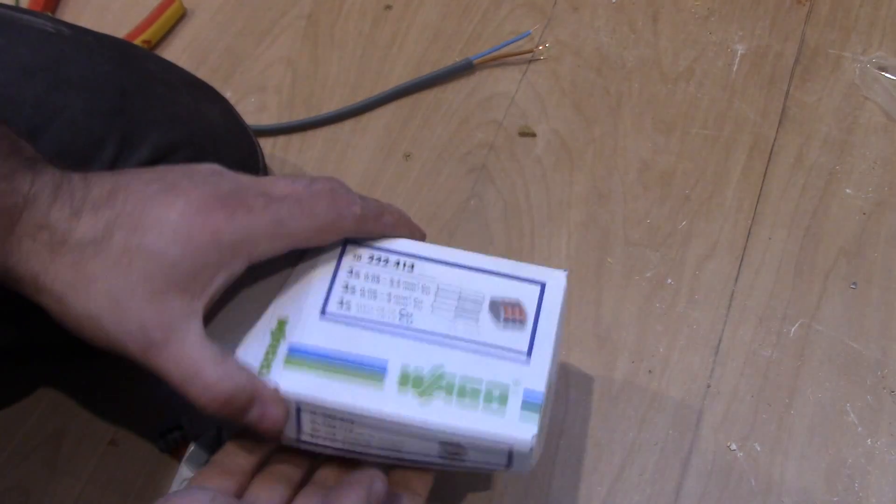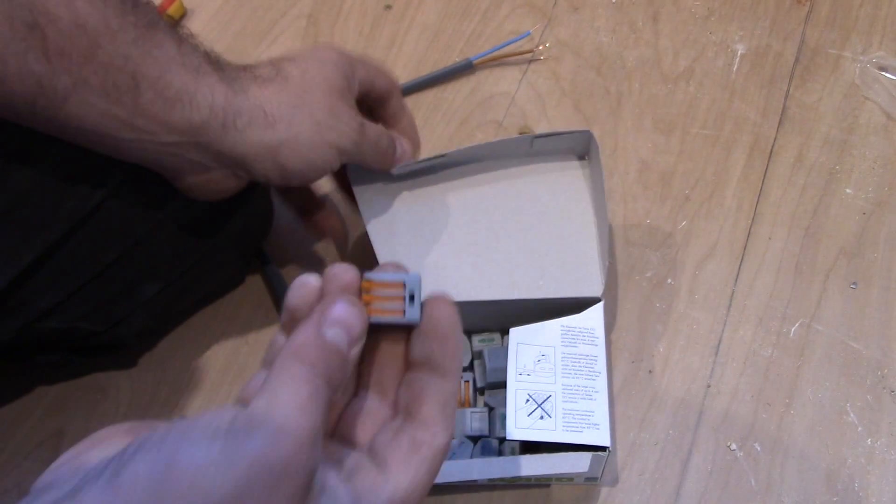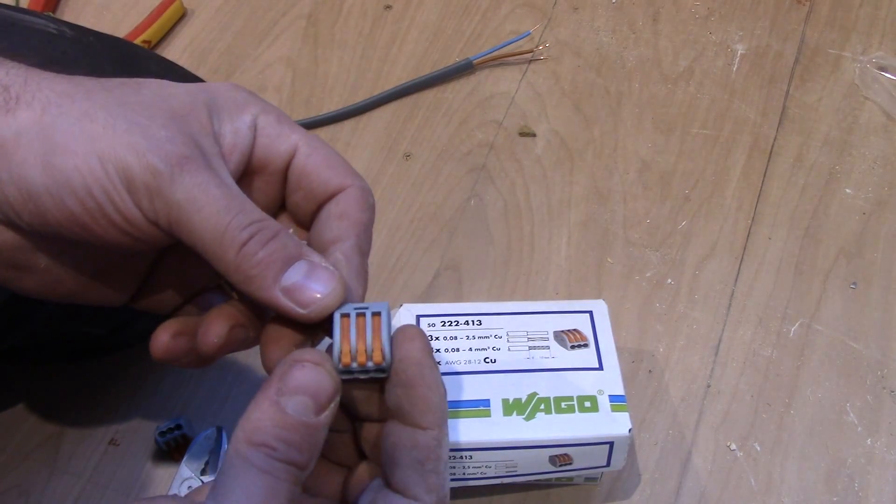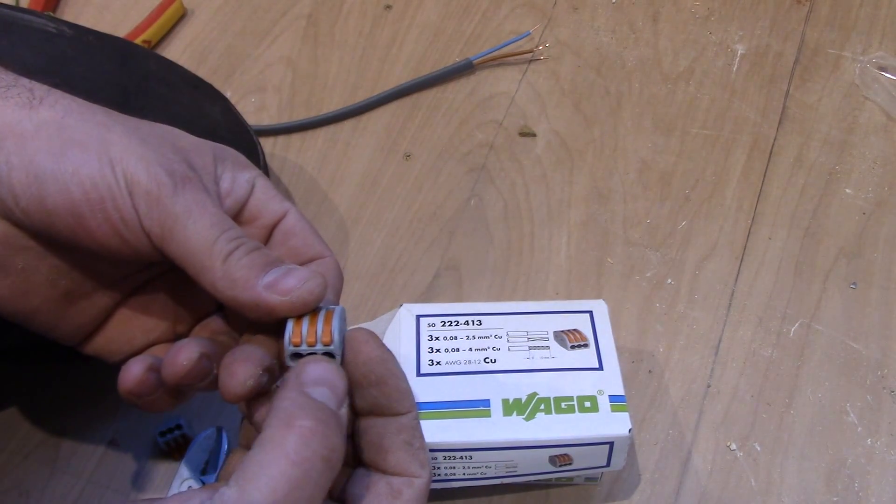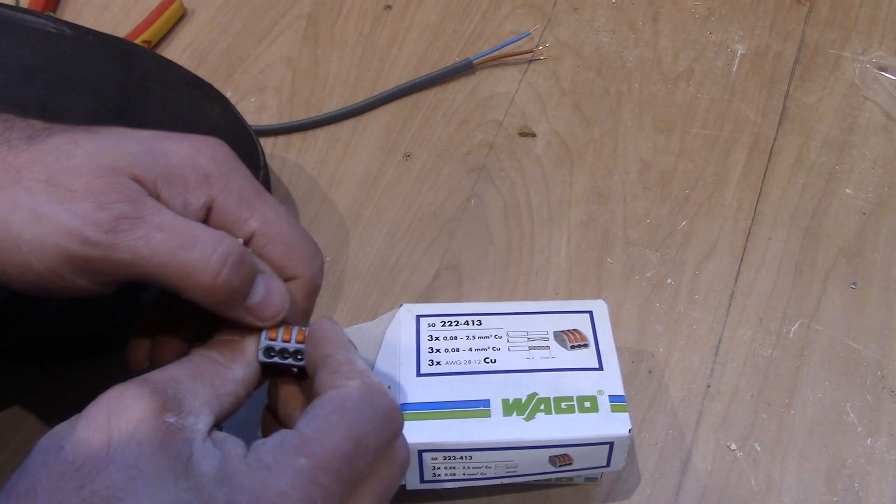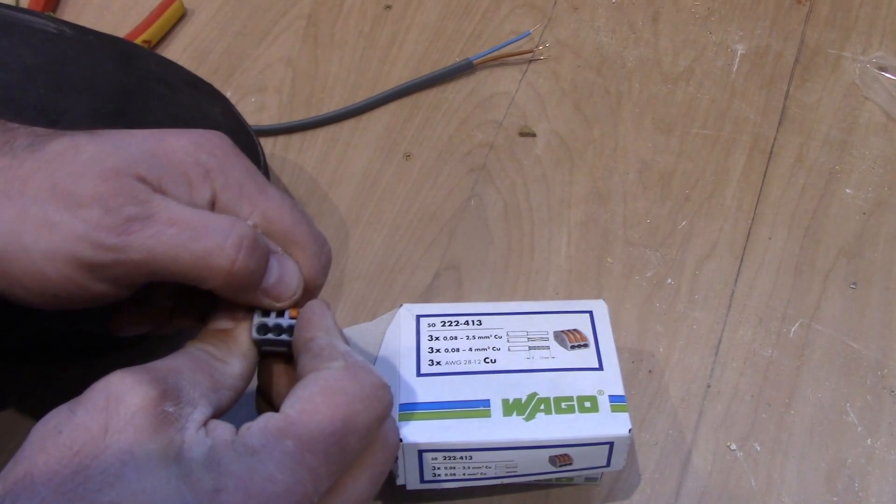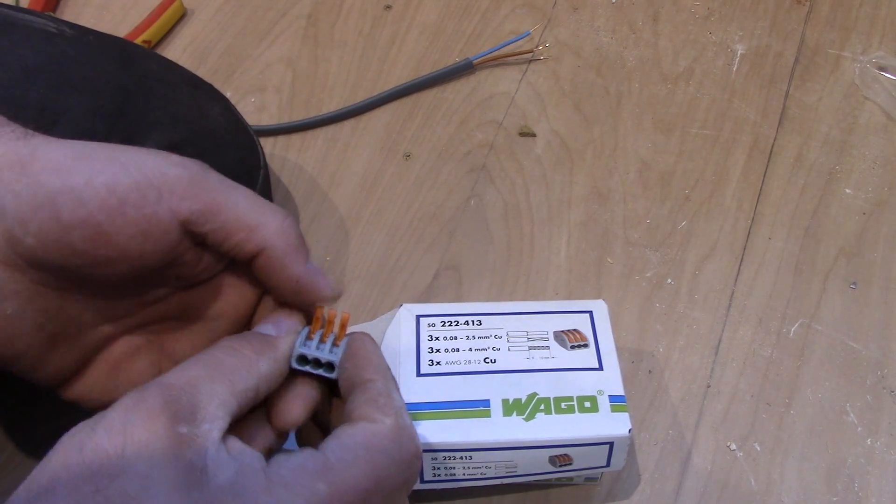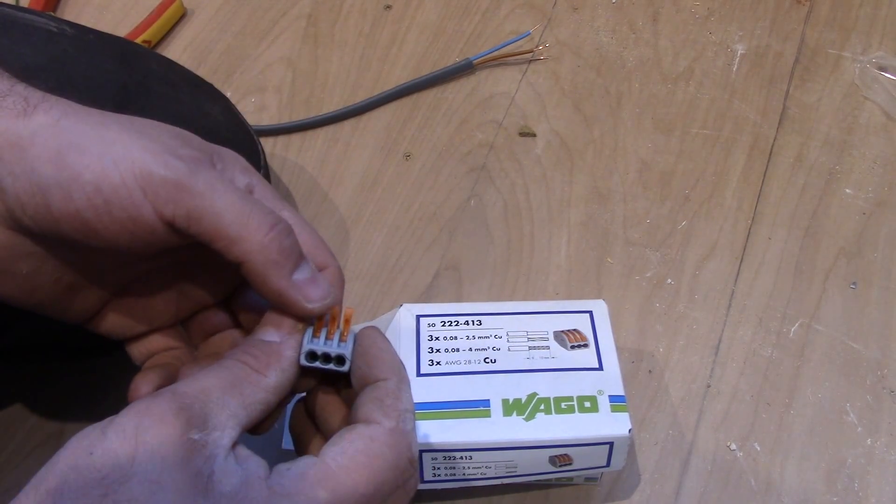This is the Wago connectors. This one for example is three-way so you can put three wires in it. Lighting or socket wires, it all can fit there.